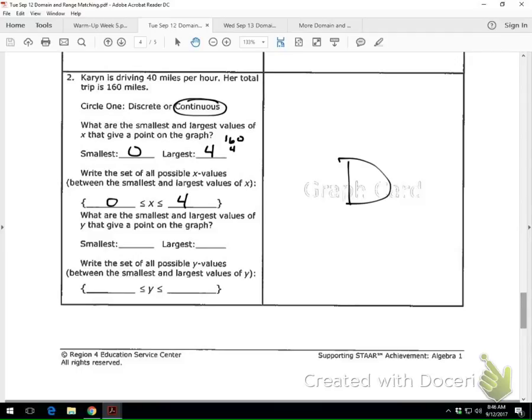Now, for our Y. This is our total miles. What's our smallest value? Zero. What's our largest? One sixty. Then you just write it. Zero, less than or equal to Y, less than or equal to one sixty. Does that make sense?